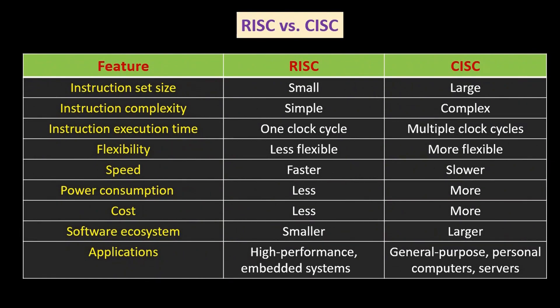Let's embark on this enlightening journey. Let's begin with a quick recap. RISC, or reduced instruction set computing, and CISC, or complex instruction set computing, are two contrasting approaches to designing computer processors. RISC architectures focus on simplicity and efficiency by employing a limited set of simple instructions. On the other hand, CISC architectures emphasize versatility by incorporating a wide range of complex instructions. In case you missed our previous video on the differences between RISC and CISC architecture, you can find the link on the screen. Make sure to check it out to get up to speed. Today, we'll take our understanding a step further and explore the intricacies of their instruction sets, using examples to illustrate how these instructions are executed.